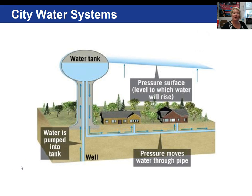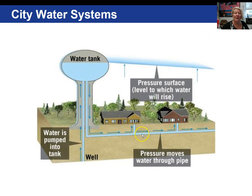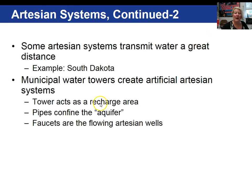Municipal water systems are artificial artesian systems. The water tower is up in the air so that the water pressure surface is high above all the homes — you do not need a pump in your house to get water when you turn on your faucet. The tower acts as the recharge area, the pipes confine the aquifer, and the faucets are the flowing artesian wells.